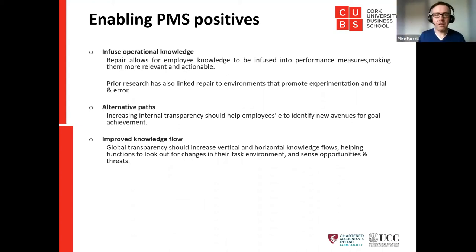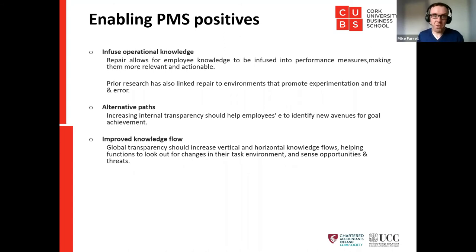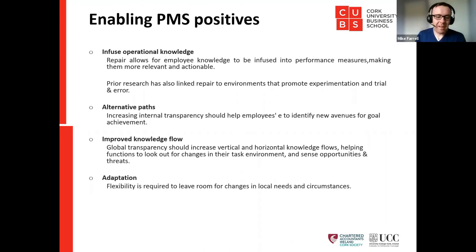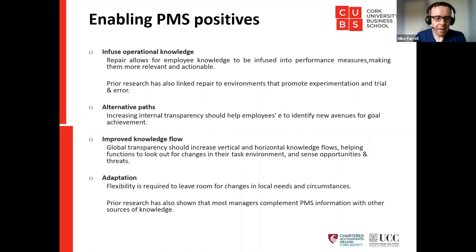Global transparency increases both vertical and horizontal knowledge flows, helping functions look out for changes in the task environment and seize opportunities or spot threats. If you're a finance manager but you're also seeing data from sales or marketing — that's horizontal knowledge flow. Vertical is information coming down from senior management. This stops you being a small cog in a very big wheel. Prior research also shows managers complement PMS information with other sources of knowledge, so overreliance on the system alone ignores how people actually make decisions.